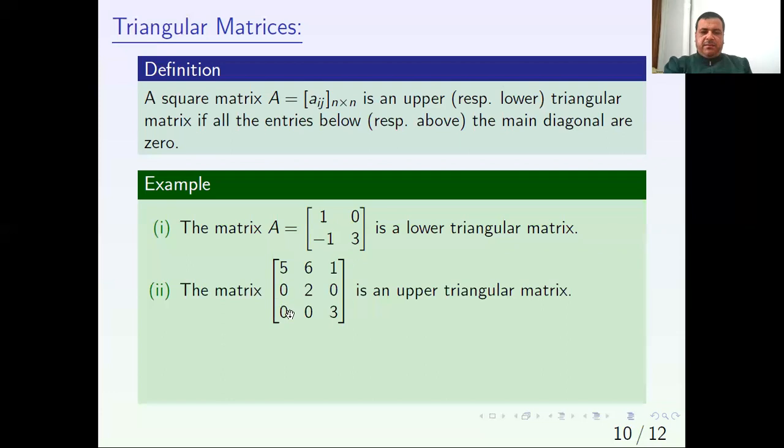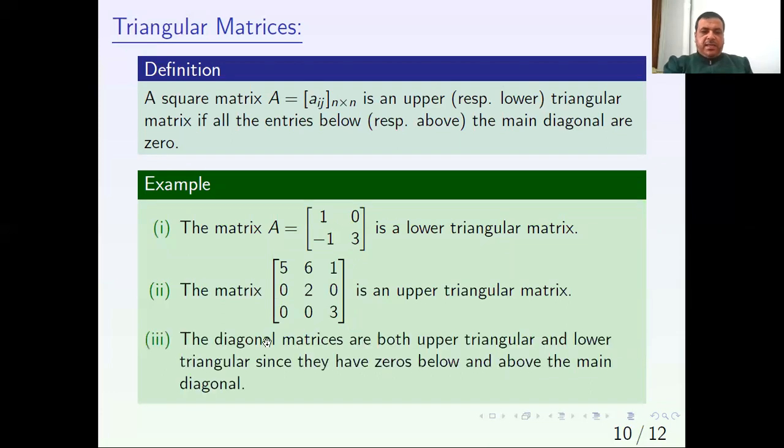Notice here the zeros are above the main diagonal, so we call it lower triangular matrix. Notice here the zeros are below the main diagonal, so we call it upper triangular matrix. Here's a 3 by 3 example. Also, diagonal matrices that we covered earlier - notice diagonal matrices have zeros above the main diagonal and zeros below the main diagonal. Therefore, a diagonal matrix can be considered both upper triangular matrix or lower triangular matrix, upper or lower at the same time. The diagonal matrices are both upper triangular and lower triangular since they have zeros below and above the main diagonal.